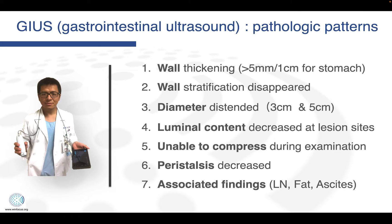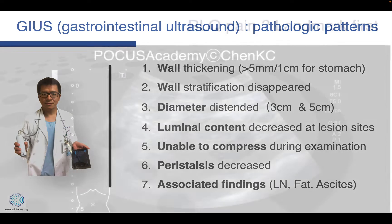Some pathologic findings of GI ultrasound can be summarized into these seven suggestions: the wall, the diameter, luminal content, whether it is compressible or not, the peristalsis, and some associated findings.